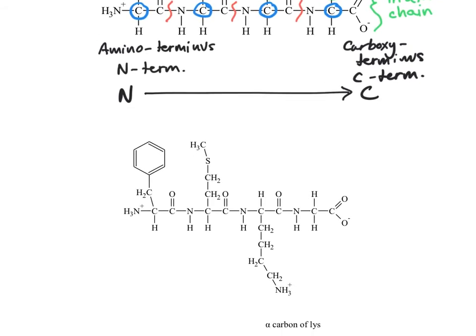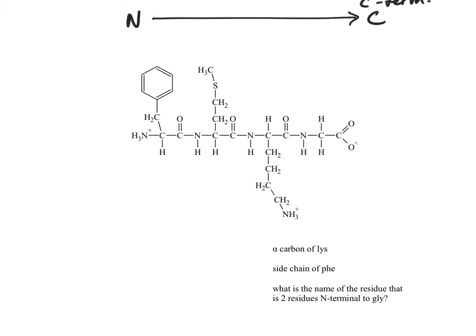Okay now that we've worked on those basic terms I'd like to go down and do a little practice. I'd like you to stop the video in a moment and answer the following questions or tasks. First we'd like to have you circle the alpha carbon of lysine. I'd like you to put a box around the side chain of phenylalanine and I would like you to write in the name or the three letter code of the residue that is two residues N terminal to glycine. That's kind of a strange way to use the word N terminal but see if you can figure out that challenge.